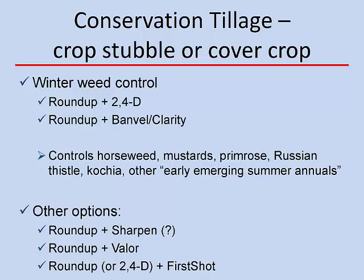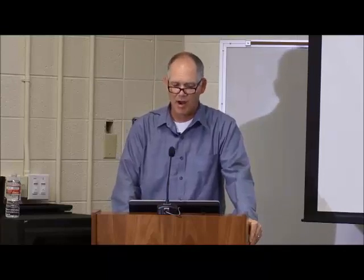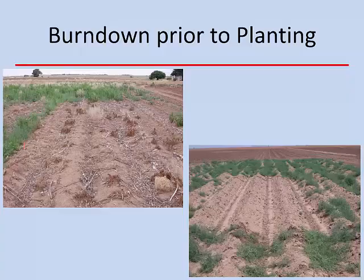With Valor, the rotation restriction is 30 days. With First Shot, depending on soil pH, it could be as low as 14 days from application to cotton planting. The point here is starting clean — we can start clean with tillage or by a variety of herbicide burndown treatments prior to planting.